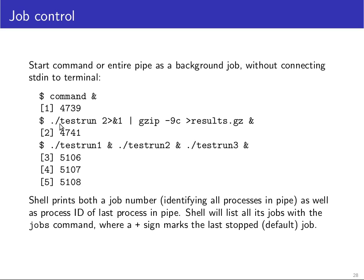Here we start a program called test_run, an executable in the current working directory. If the current working directory isn't in the PATH variable, you have to explicitly tell the shell to find it by writing ./test_run — the dot-slash prevents the shell from searching via PATH. We then redirect standard error to the same location as standard output, so both are piped together into another command, in this case a compression tool with a high-compression option, reading from standard input. The output is written to results.gz.